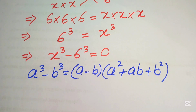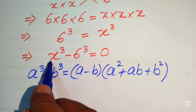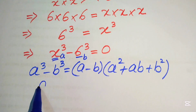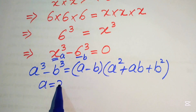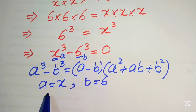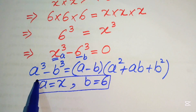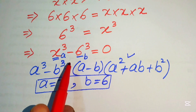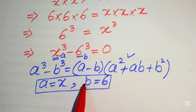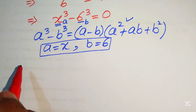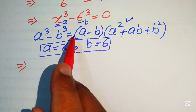Here the value of a is x and the value of b is 6. We substitute a equals x and b equals 6 into the right-hand side of the difference of cubes formula to expand the cubic equation.